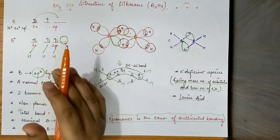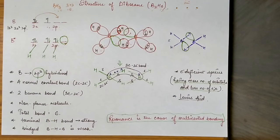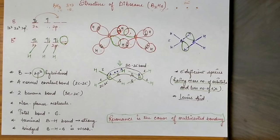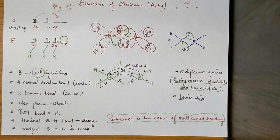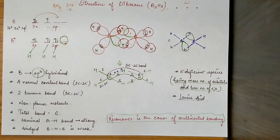The three-centered two-electron bond is the most popular exam question — what type of multi-centered bonding does B2H6 have? You have to check how many centers and how many electrons are involved. I will also do two more examples after diborane: Al₂Cl₆ and Al₂Me₆, so you understand that multi-centered bonding is not only one type.